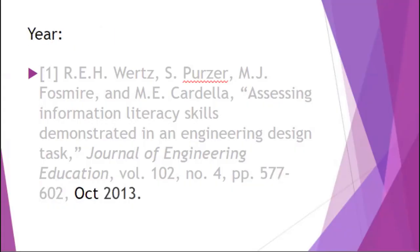Lastly is the year that it was published, written as the month abbreviation followed by the year. In this case, October is written as OCT, and then the year it came out, followed by a period. These are all the necessary components put together into a citation so that you know exactly where that source came from.